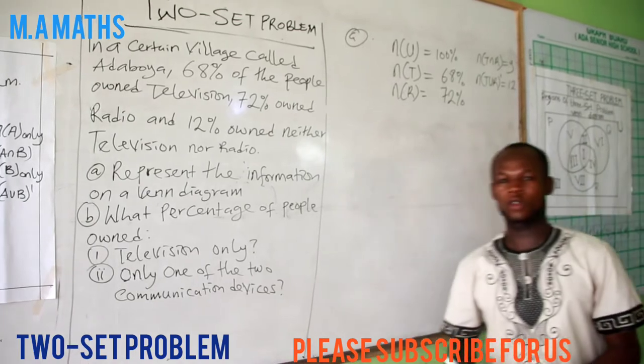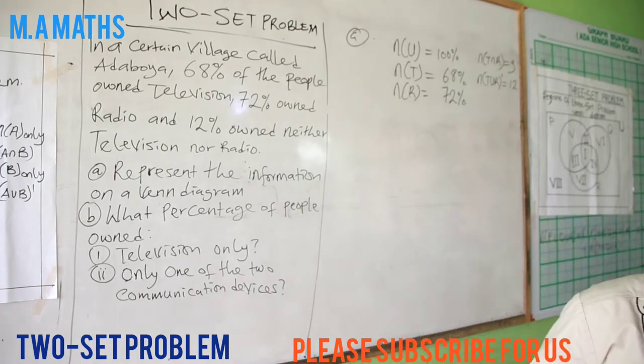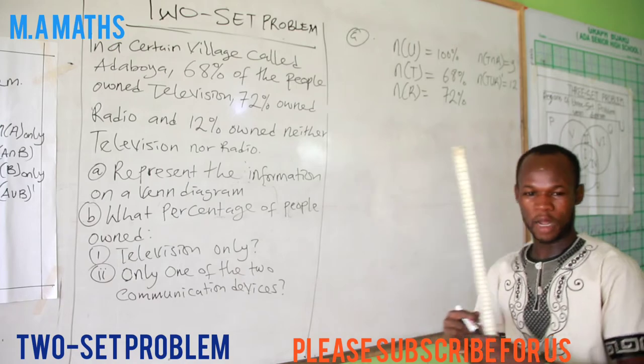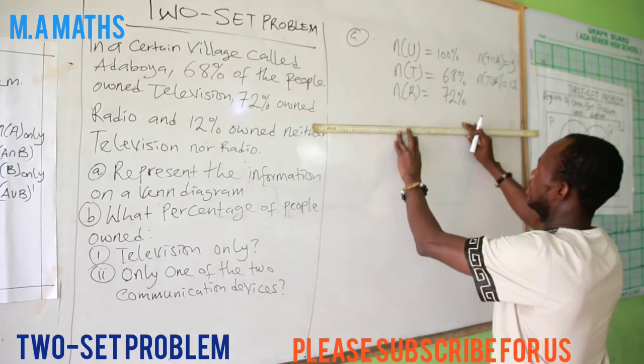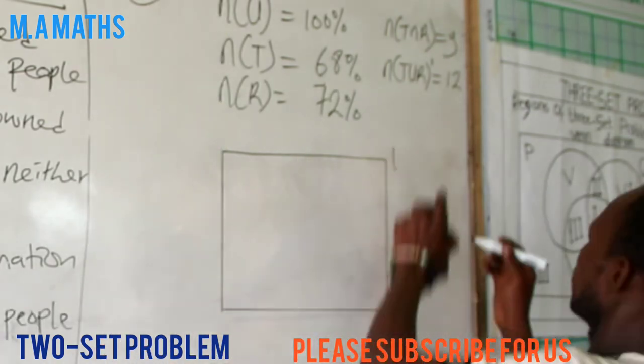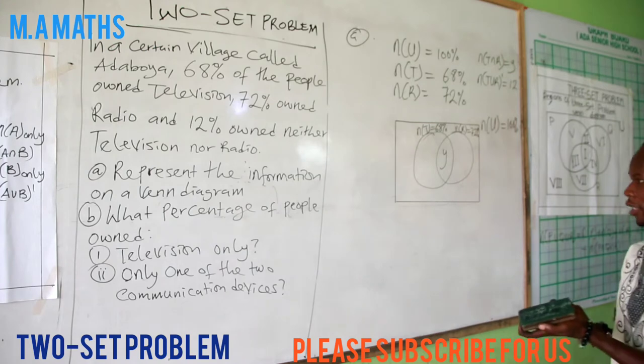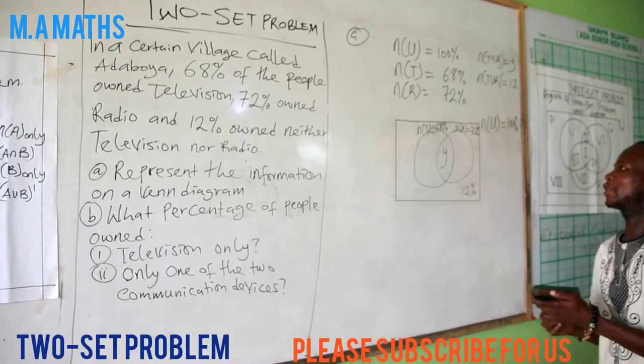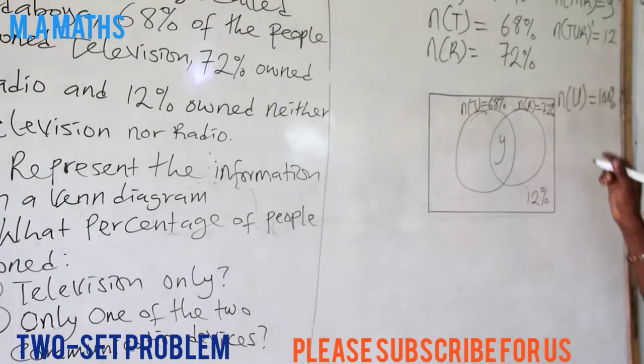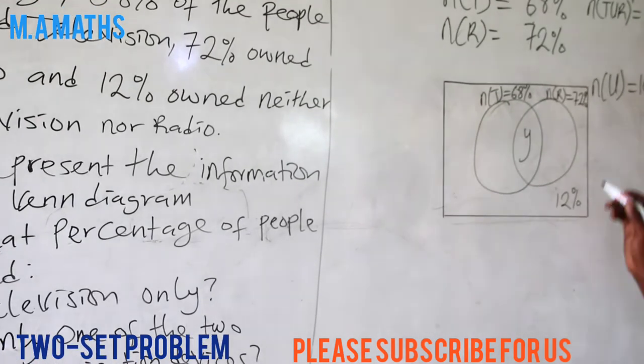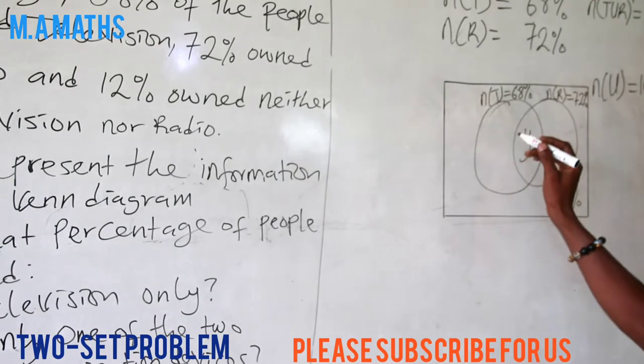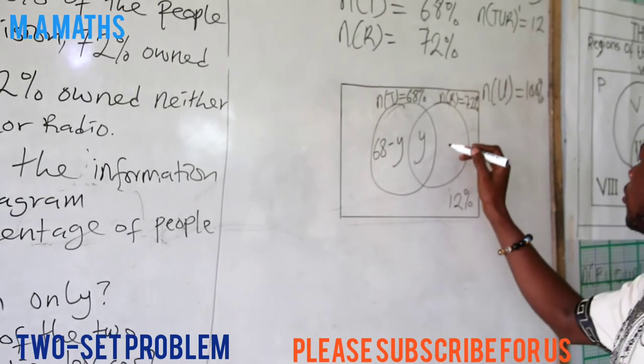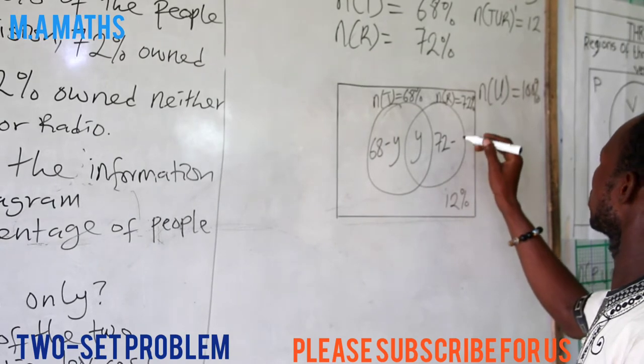So let's draw our Venn diagram together. In drawing a Venn diagram we need a ruler and a compass, but I have my ruler with me. It is rather unfortunate I don't have the blackboard ruler. So we have the intersection to be y. The 12% represents n(T union R) prime. Only television will give us 68 minus y. Only radio will give us 72 minus y.